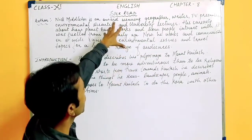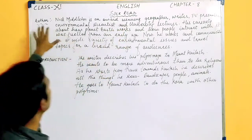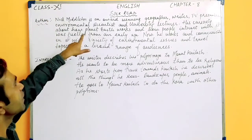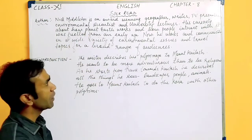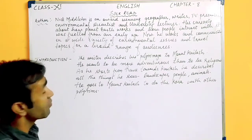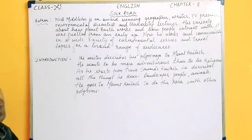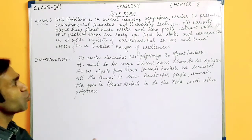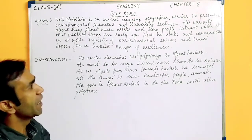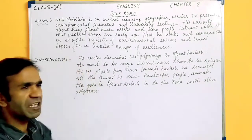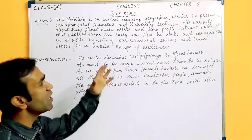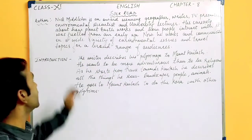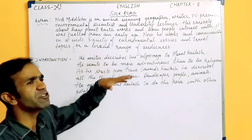Let us first of all know about the writer of Silk Road. The writer is Nick Middleton. He is an award-winning geographer, writer, TV presenter, environmental scientist, and university lecturer. His curiosity about how planet Earth works and how people interact with it was fueled from an early age, from his childhood. Now he works and communicates on a wide variety of environmental issues and travel topics for a broad range of audiences.